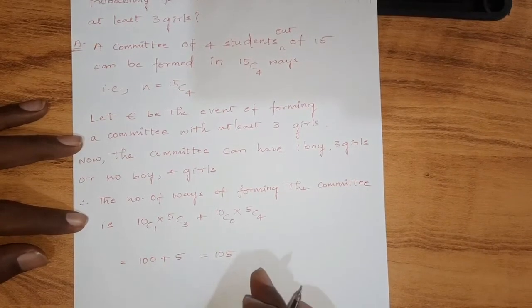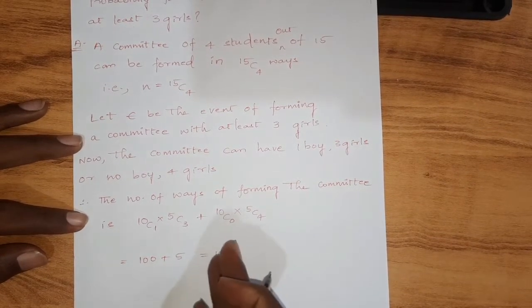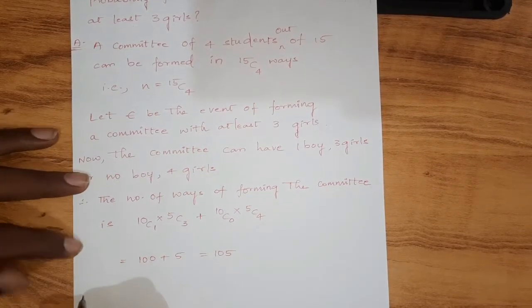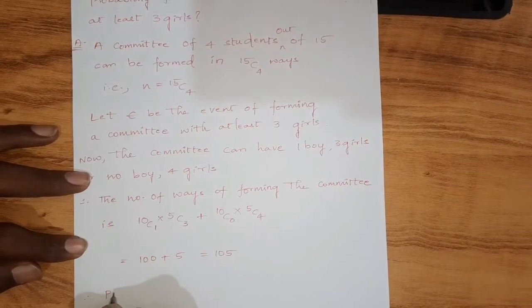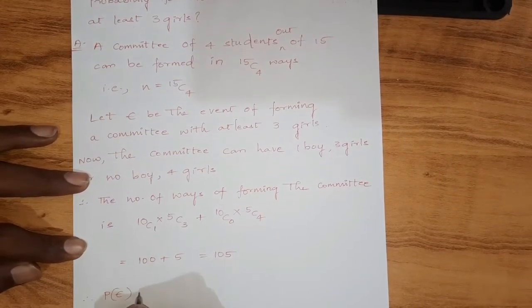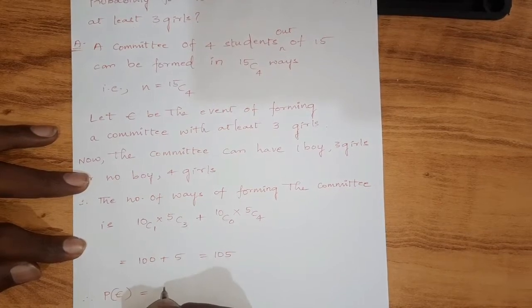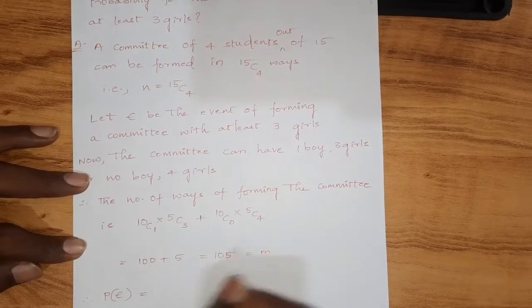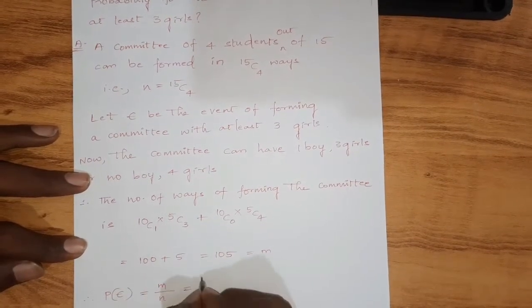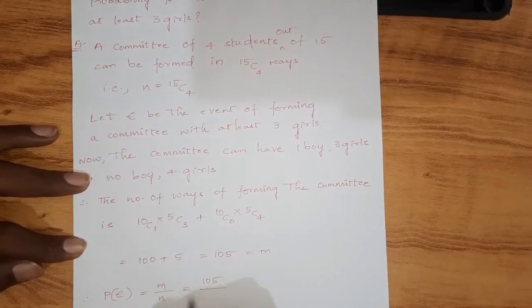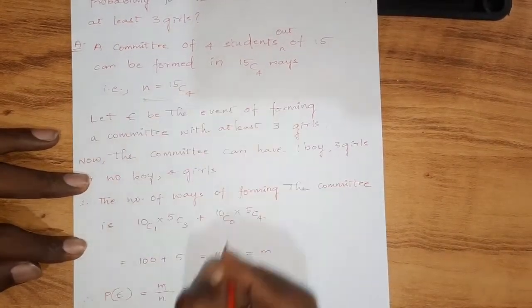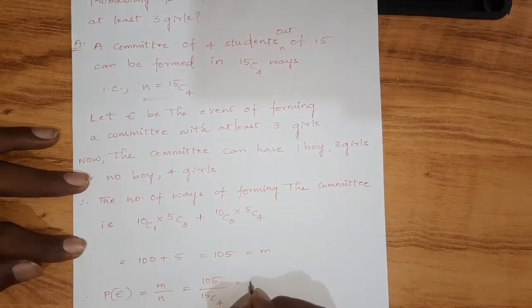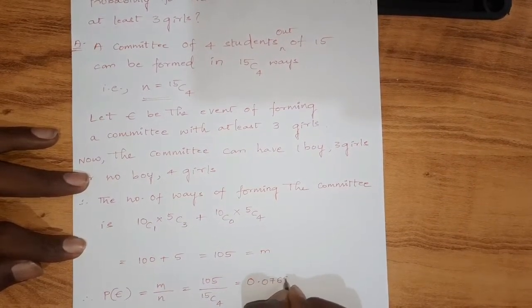Now we need to find the probability. The probability P(E) = m / n, where m = 105 and n = 15C4. If we expand and solve this, we will get the value approximately 0.0769.